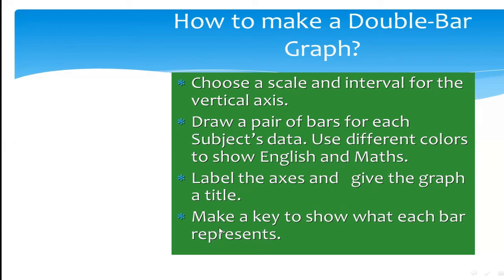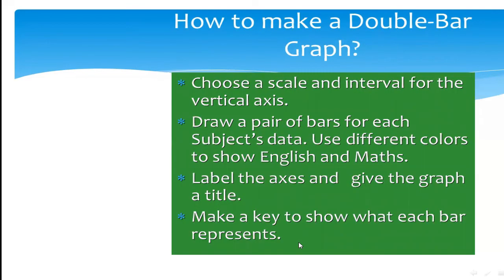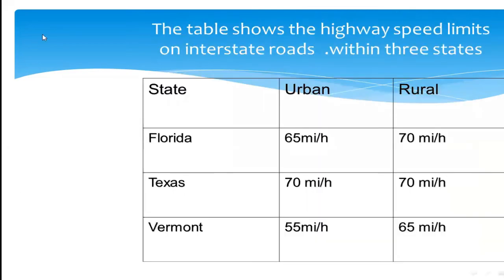The fourth and last step is to make a key to show which bar represents what. Since there are two different colors, the key tells us — for example, light blue is for English marks and dark blue is for Math marks — so viewers can easily identify which bar belongs to which category.